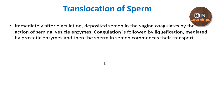First we will see how that translocation happens, and during translocation, what biochemical changes happen in the sperm and how those changes help the sperm to fertilize the ovum. Immediately after ejaculation, the semen in the vagina gets deposited because of coagulation, and this helps the semen stay in the deeper part of the vagina for some time. After coagulation, there will be liquefaction, and after liquefaction the sperm will start its transport.